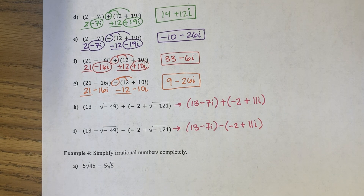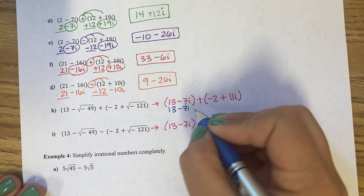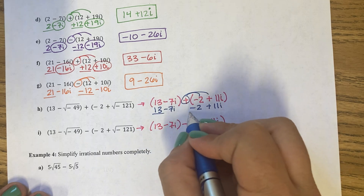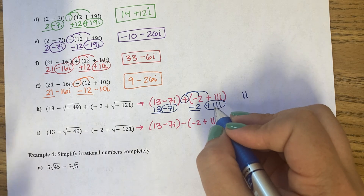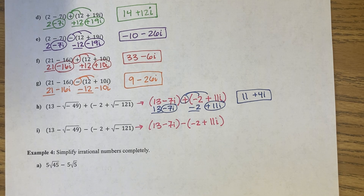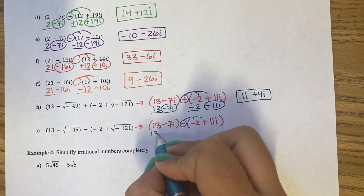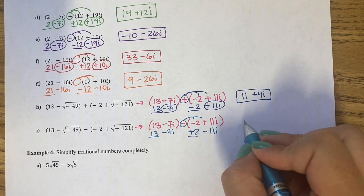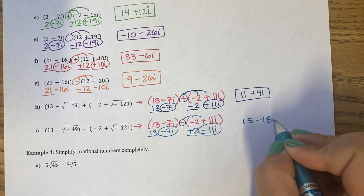Once we've fixed those roots, we can combine. So 13 minus 7i — this will stay a minus 2 and a plus 11i. 13 minus 2 is 11. Negative 7 plus 11 is plus 4i. And then we have a minus sign between them, which will make this into a plus 2 and a minus 11i. 13 plus 2 is 15. Negative 7 minus 11 makes a negative 18i.